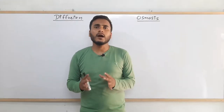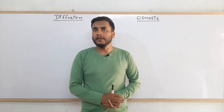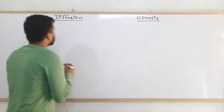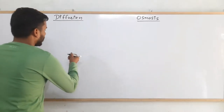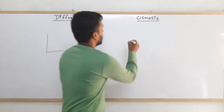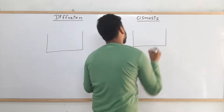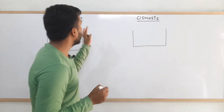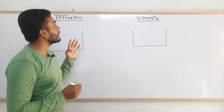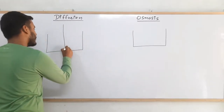Diffusion and osmosis are almost similar but they are not actually the same thing. Let's understand how they are different. For that, let me draw two figures — one on the diffusion side and another on the osmosis side — and we will study them side by side so that it will be easier for us to differentiate between them.